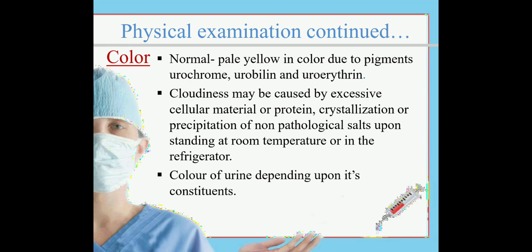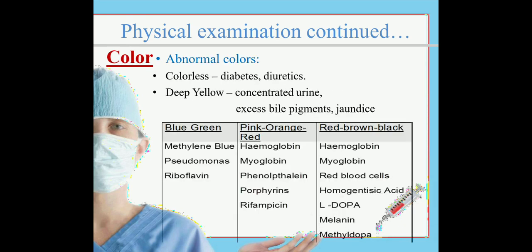The normal color of urine is pale yellow, due to pigments urochrome, urobilin, and uroerythrin. Cloudiness may be caused by excessive cellular material, protein crystallization, or precipitation of non-pathological salts upon standing at room temperature or in the refrigerator. The color of urine depends upon its constituents.